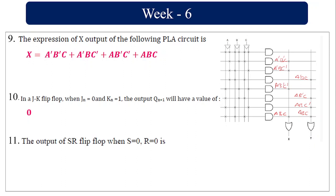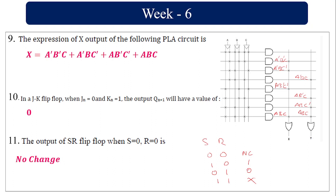The output of the SR flip-flop: when S=0 and R=0, there is no change. When S=1 and R=0, it is set. When S=0 and R=1, it is reset. When S=1 and R=1, it is indeterminate.